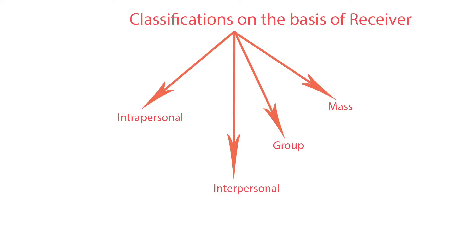First: classification on the basis of receiver. Based on receivers, we classify communication into four types: intrapersonal communication, interpersonal communication, group communication, and mass communication.